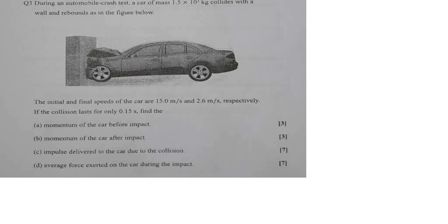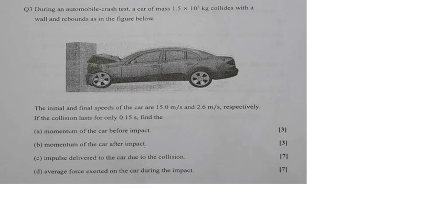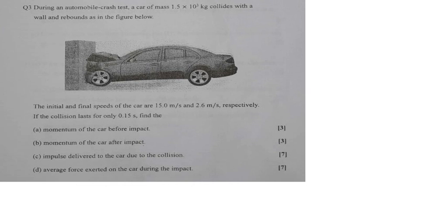Let's talk about question 3, which is under momentum. The question says: during an automobile crash test, a car of mass 1.5 × 10³ kg collides with a wall and rebounds as shown in the figure. The initial and final speeds of the car are 15.0 meters per second and 2.6 meters per second respectively. The collision lasts for only 0.15 seconds. Find: (a) momentum of the car before impact, (b) momentum of the car after impact.